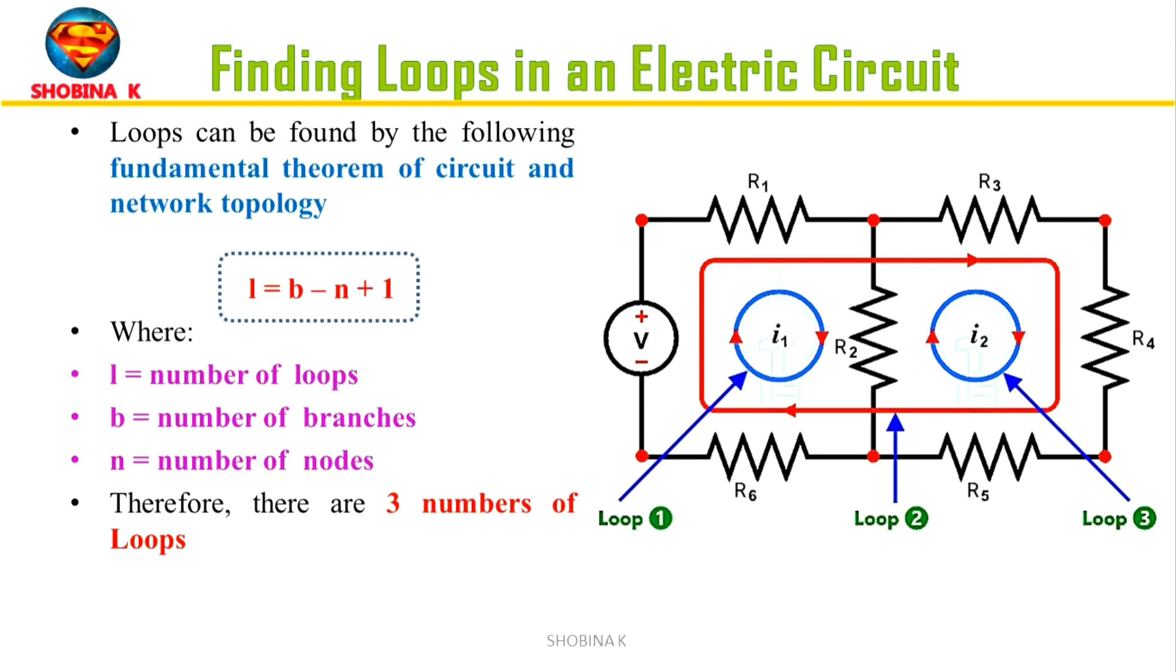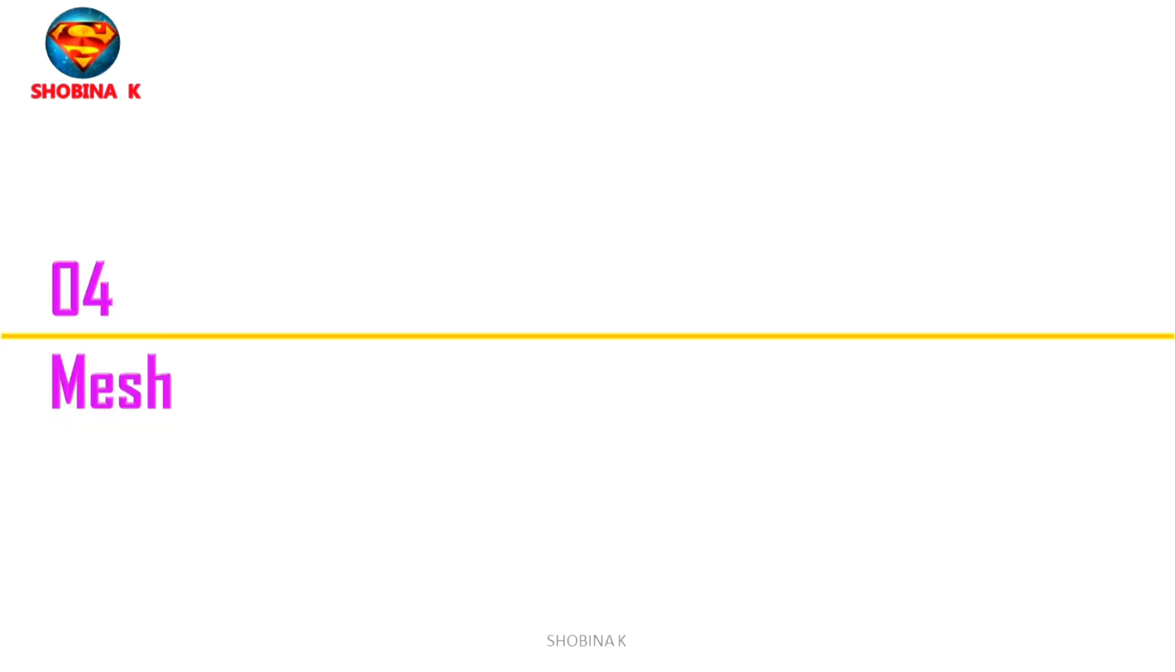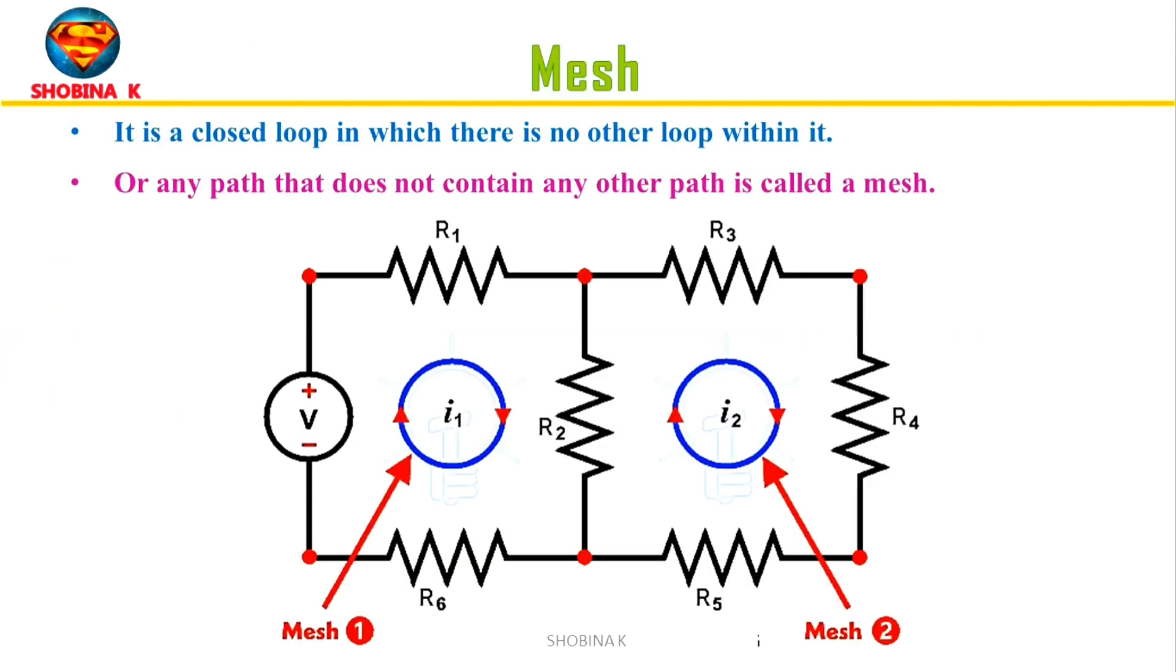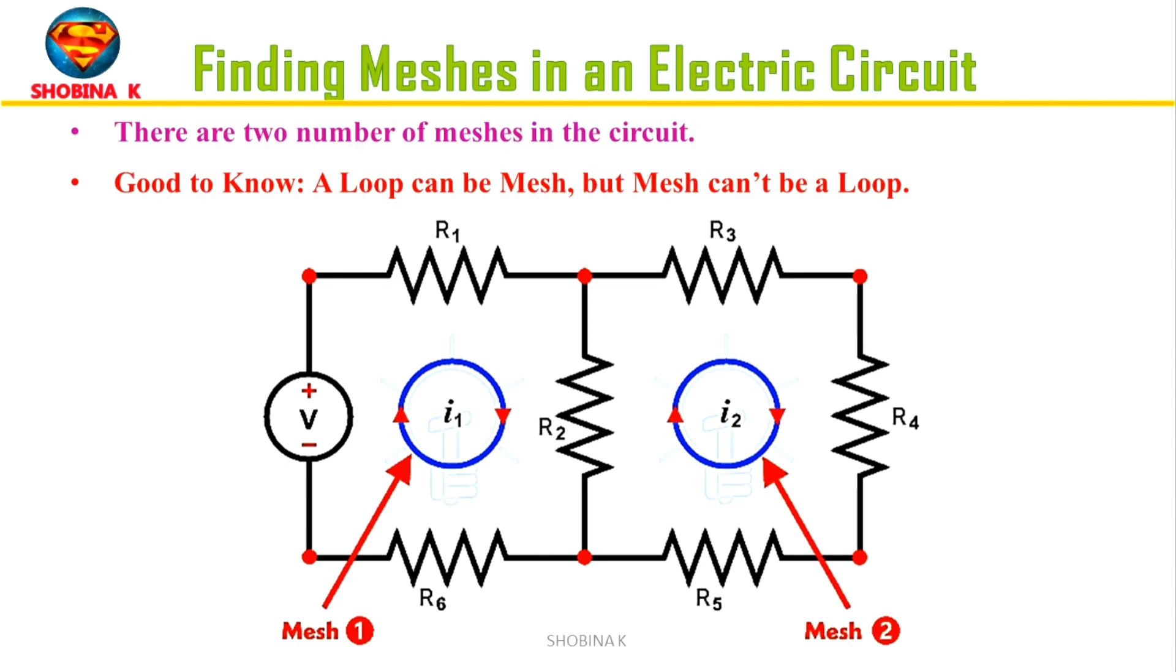Next up, we have mesh. It is a closed loop in which there is no other loop within it, or any path that does not contain any other path is called as a mesh.